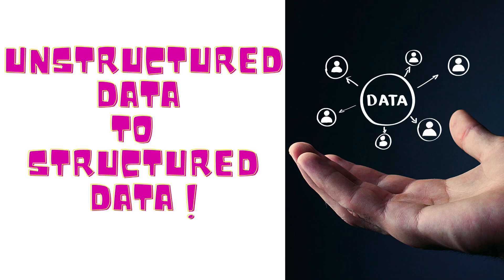Data can be represented in various types of structures, formats, and media. Unstructured data refers to data with various entries that cannot be classified and fit into one simple model. In other words, unstructured data is information that either does not have a predefined data model or is not organized in a predefined manner.